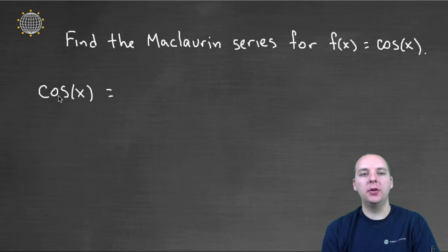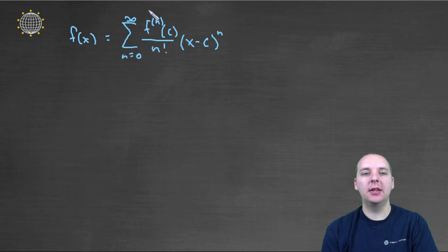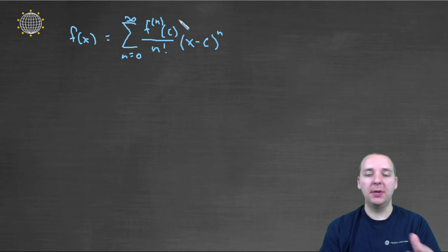Obviously what we're going to try to do is write cosine in terms of some series type of notation, but we have to figure out what that would be. So the place we're going to begin is the basic template of a Taylor series. And recall a Maclaurin series is basically just a Taylor series that's centered at zero. So we are starting with this basic template.